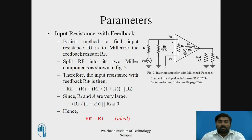The next parameter is input resistance with feedback. Figure 2 shows the input resistance with feedback for the inverting amplifier. To find the input resistance, the easiest method is to millerize the feedback resistor RF — that is, split RF into two Miller components as shown in figure 2. Therefore, the input resistance with feedback RIF equals R1 plus RF divided by (1 plus A), in parallel with R1. Since RI and A are very large, RF divided by (1 plus A) in parallel with RI is nearly zero, so RIF equals R1.